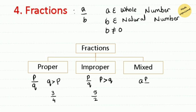The third type is a mixed fraction where A is an integer and P over Q is a fraction part. In mixed fractions, Q is greater than P. That means the denominator is always greater than the numerator.